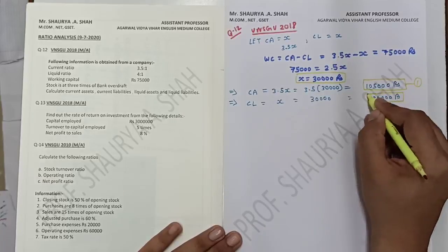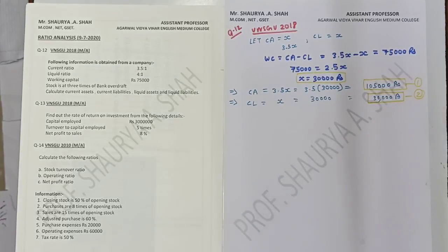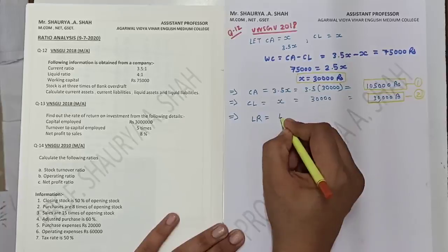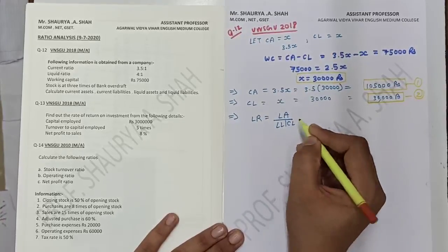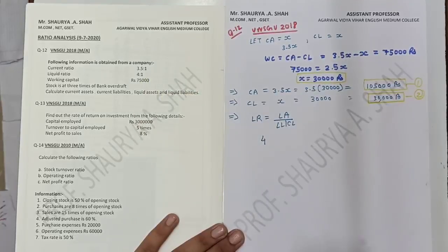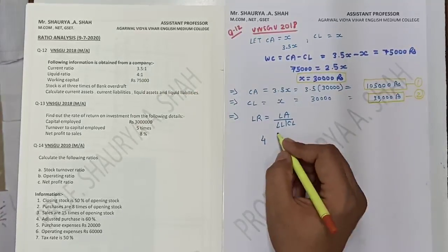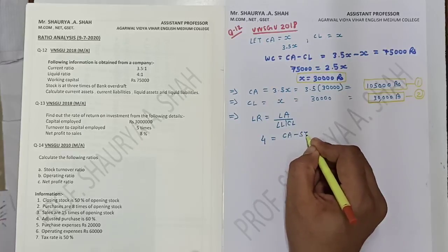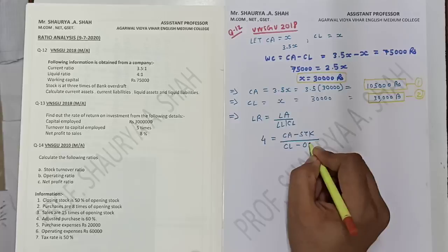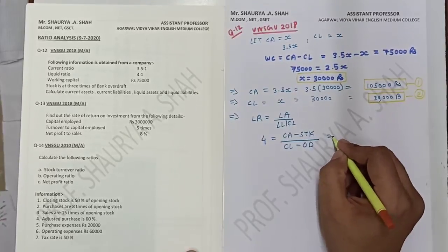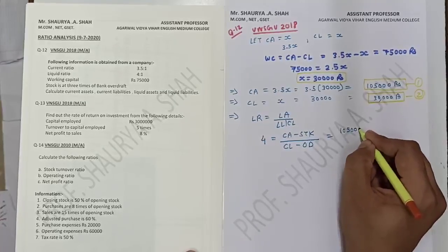Now they have asked for liquid assets and liquid liabilities. The liquid ratio is liquid assets upon liquid liabilities, which equals 4 to 1, or simply 4. So: 4 equals liquid assets upon liquid liabilities. Liquid asset is current asset minus stock; liquid liability is current liability minus bank overdraft. In this sum specifically, bank overdraft is present, so we need to deduct it. So: 4 equals (1,05,000 minus stock) divided by (current liability minus bank overdraft).